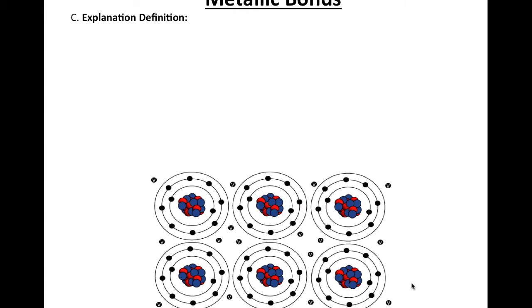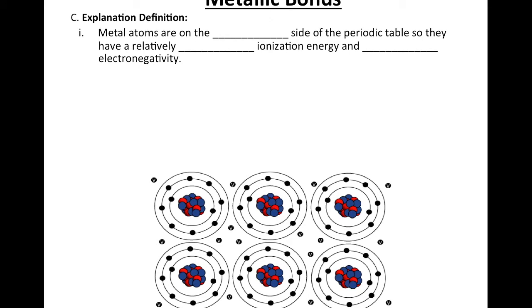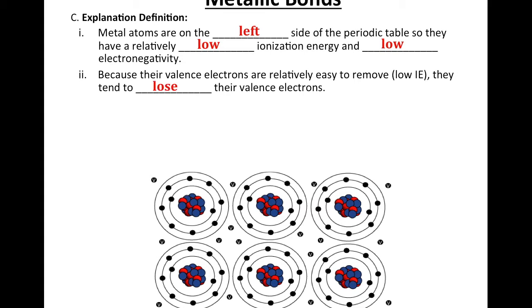Let's go back through the notes in more detail. Metal atoms are on the left side of the periodic table. They have relatively low ionization energy — the energy required to remove a valence electron — so it takes very little energy to remove an electron. They also have low electronegativity, which is the tendency of an atom to attract electrons when bonding, so they have a low tendency to attract electrons. Both of these combine to mean that metals tend to lose their valence electrons.